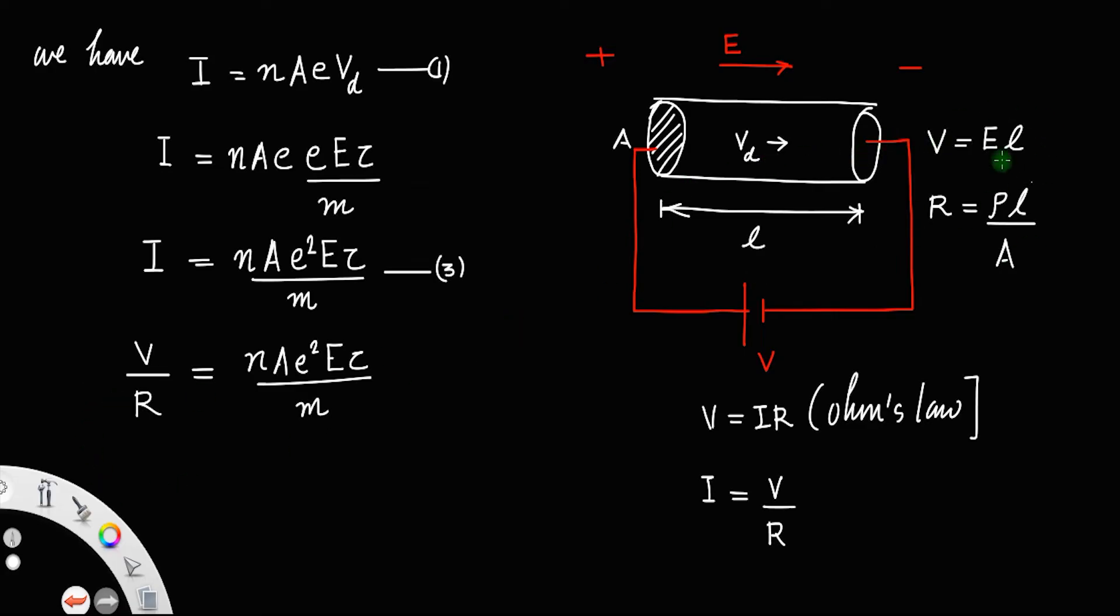So substitute these two values in here. So that voltage will be EL divided by resistance is ρL by A where ρ is the resistivity. You can cancel this L and this L. So I will write this on the right hand side nAe²Eτ divided by m, that is when you simplify this you will get...